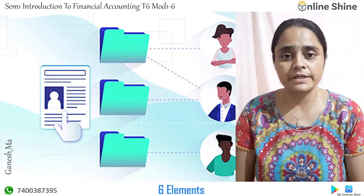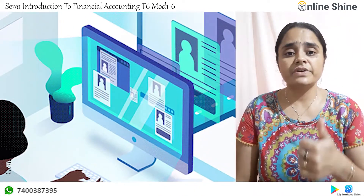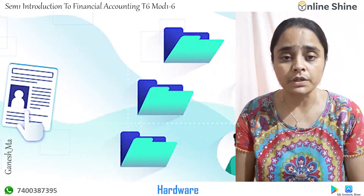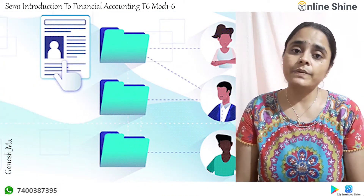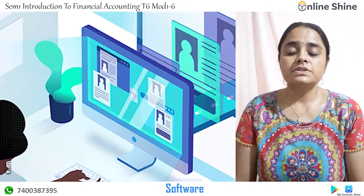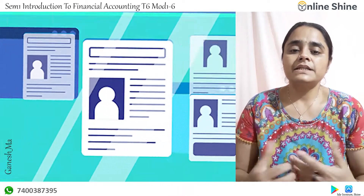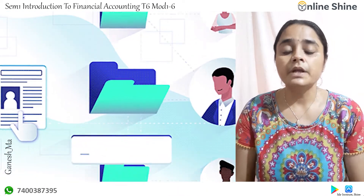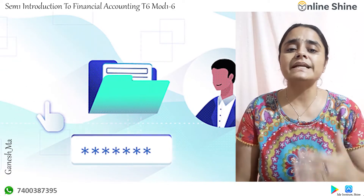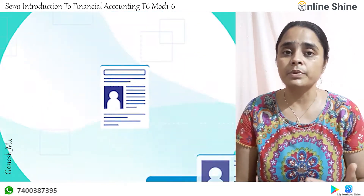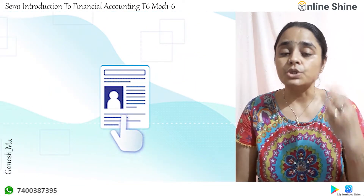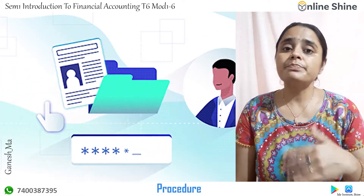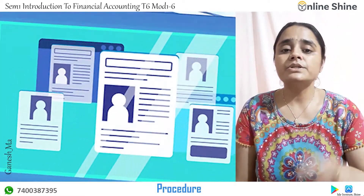You need six things for the computerized maintenance of accounts. The first one is hardware — that is the physical unit of a computer. The second one is software, which means the data, instructions, programs, or commands given to the computer. The third element is the human being, who provides those instructions and data to the computer.